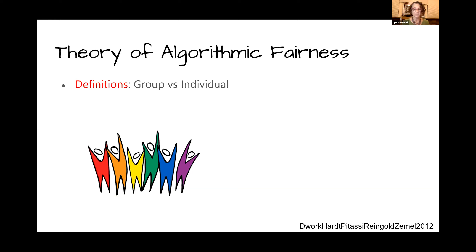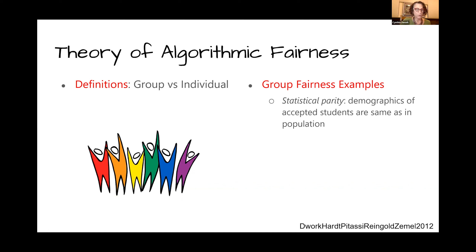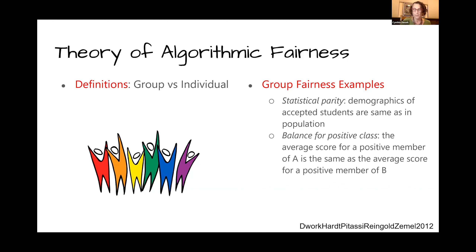This dichotomy echoes the statistical inference versus individualized decisions distinction discussed by Underwood. Group fairness guarantees are maybe the first thing you would think of — they guarantee relationships between certain statistics of decisions or scores about typically disjoint demographic groups. For example, statistical parity would require that the demographics of accepted students at a university match the demographics of the population at large. Balance for the positive class requires that for groups A and B, the average score for a positive member of A equals the average score for a positive member of B.